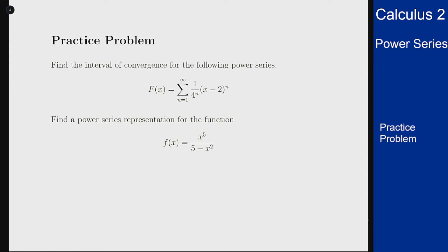For this example, we want to analyze two problems involving power series. For the first one, we want to find the interval of convergence for a given power series: (1/4^n)(x-2)^n. The way we approach these problems is using the ratio test on the terms of the power series.